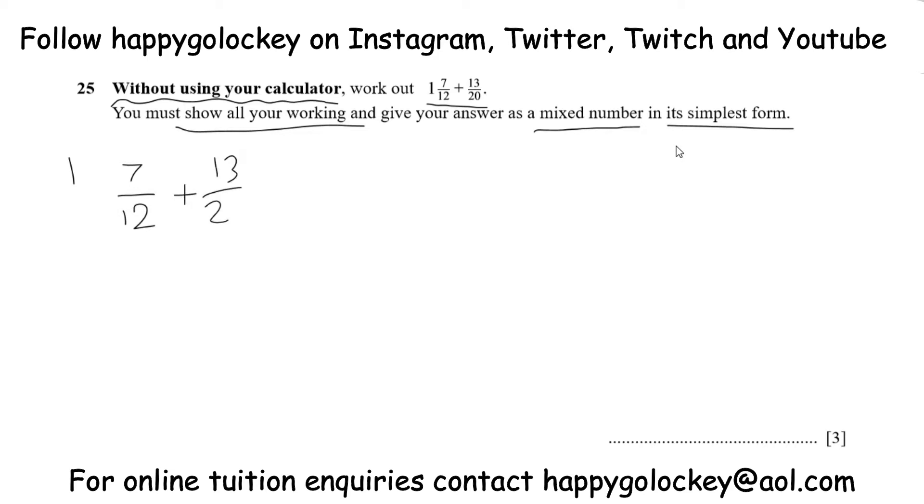Many people make mistakes on adding fractions just by adding the top and adding the bottom to get 20 over 32. That's obviously not the case. We can't add twelfths and twentieths because they're two different sizes, so we need to get a common denominator. In other words, the bottom part of the fraction needs to be the same.